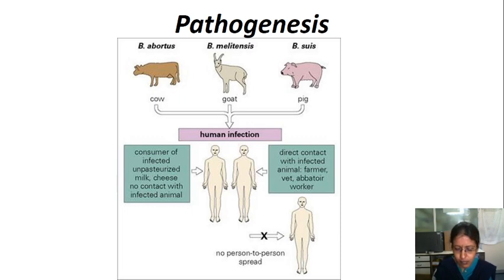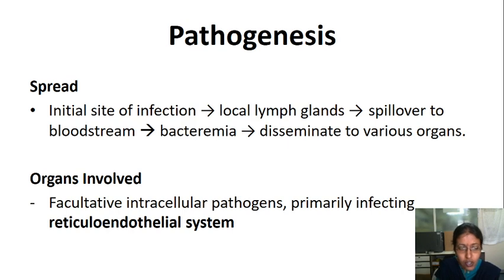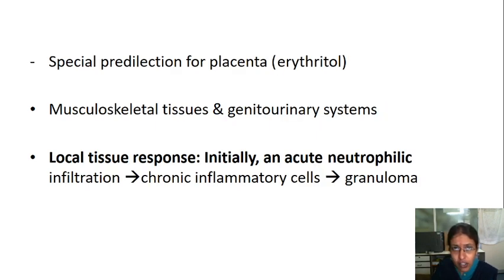From the initial site of infection, Brucella spreads to local lymph nodes, then spills over into the bloodstream, and from there disseminates to various organs. As facultative intracellular pathogens, they primarily infect the reticulo-endothelial system. They have special predilection for the placenta due to erythritol present there. Musculoskeletal tissues and genitourinary systems are also involved. Local tissue response begins with acute neutrophilic infiltration, which progresses to form a granuloma.